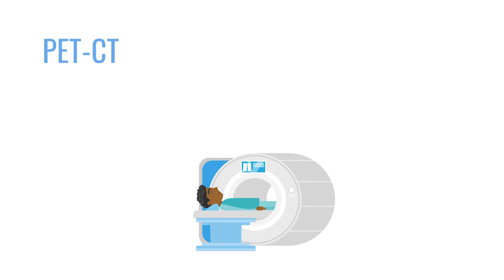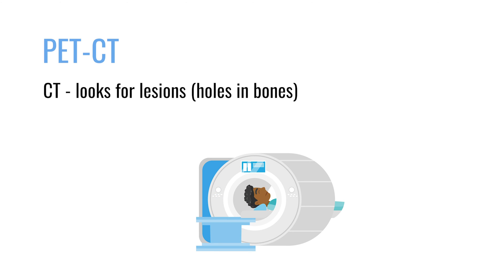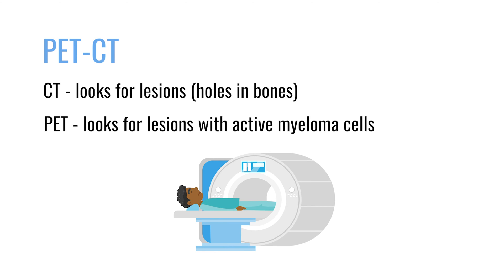Sometimes a CT scan is easier and is a much faster tool to do more frequently. Oftentimes we do CT-PET. The CT scan is basically a much more sensitive x-ray to look at your bones, looking for lesions and those punched-out holes in your bones. The PET is a functional study where we look to see if any of those lesions take up the tracer, which often translates to an active lesion or active tumor.